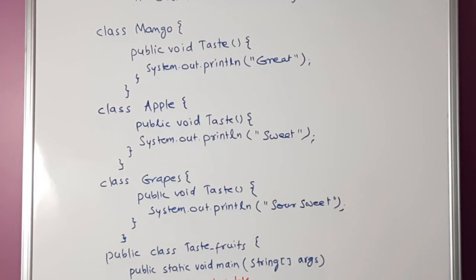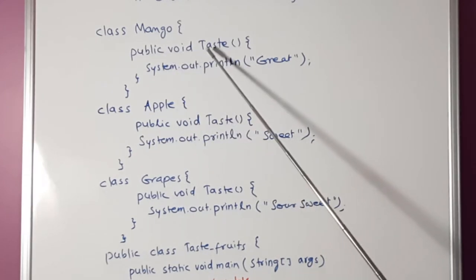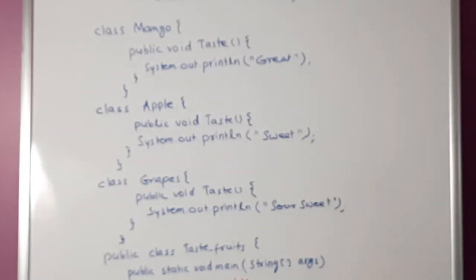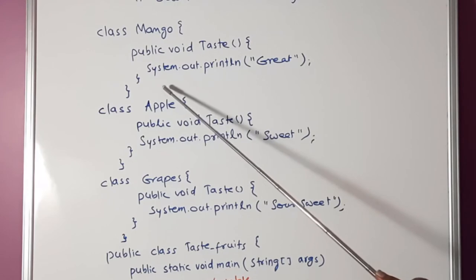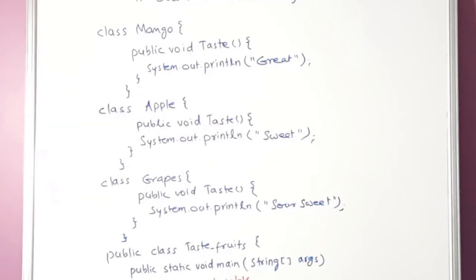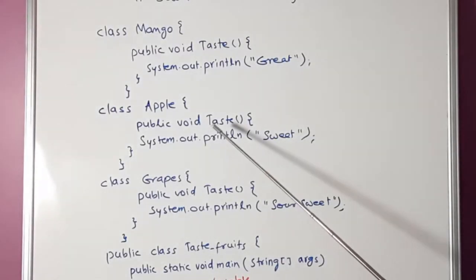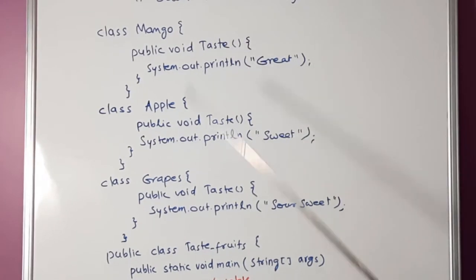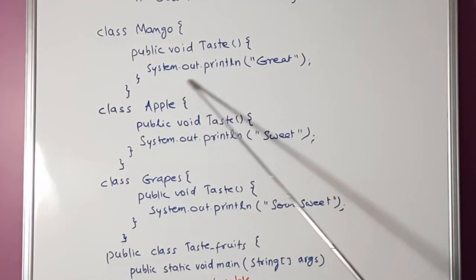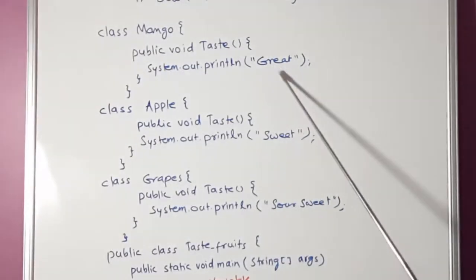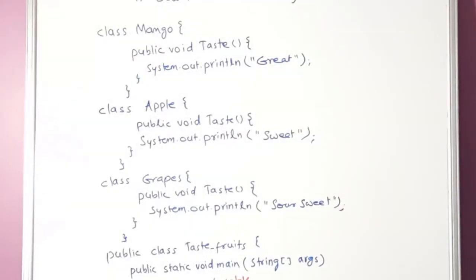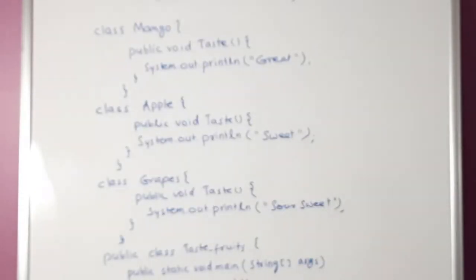These are the three class names. In each class, we are creating a function called taste. The name of the function is the same in all three classes. How do we differentiate between the functions? Whenever we call a function, we need to specify the object of that particular class. Each class will have its own object, and that object will call the function from that class only. So even if the names of these functions are the same, they belong to different classes. Inside the taste function, we are simply printing one line. I will also paste a copy of this program in the comments box under this video — copy it, paste it into the newly created class in BlueJ, then save it, compile it, and run it.